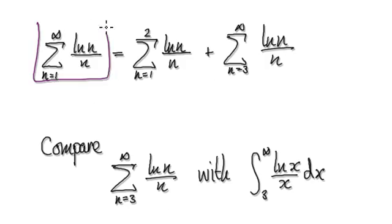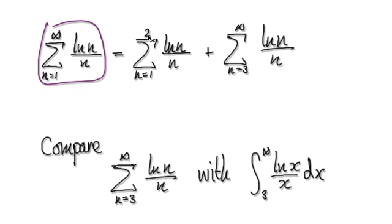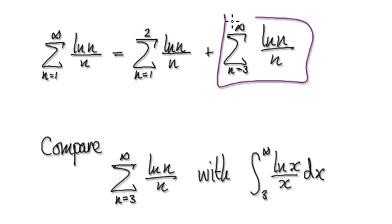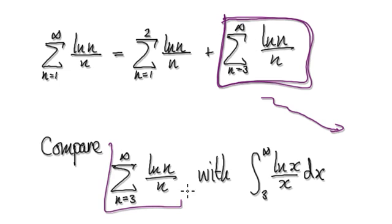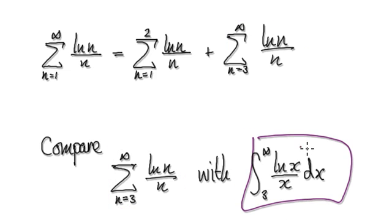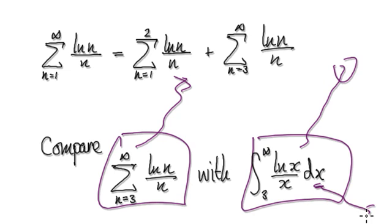So this is what we're trying to determine — whether or not this series will converge or diverge. We're going to break this up as two parts: a finite sum plus a sum from 3 to infinity. The integral test theorem says that if the corresponding integral diverges, then the series also diverges; and if the integral converges, then the series also converges.